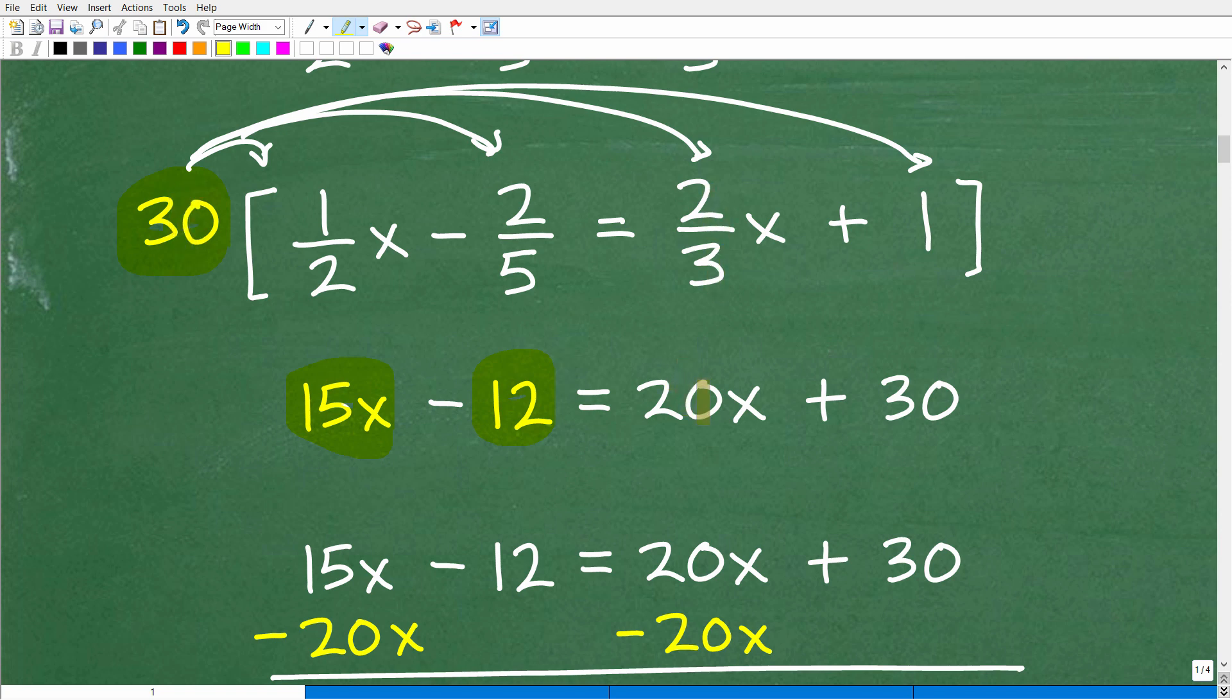30 times 2/3 is going to be 20. Or 2/3 x is going to be 20x. 3 goes into 30, 10. 10 times 2 is 20. And then 30 times 1, of course, is 30.